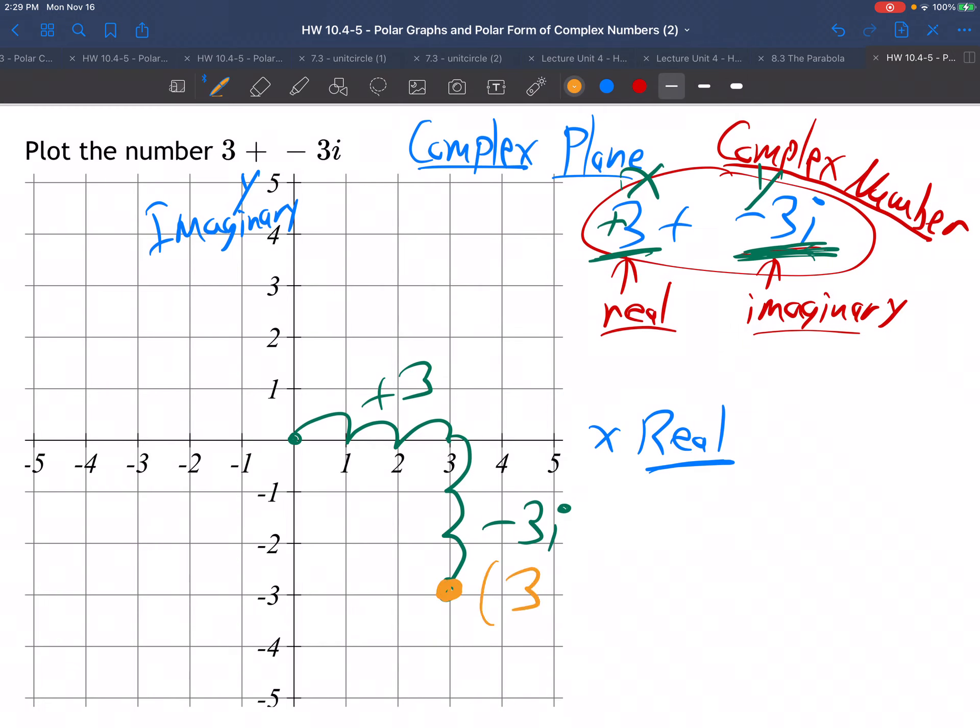So 3, well, we say that's the point. This right here is the point 3 plus negative 3i. Or you could just say 3 minus 3i, same thing.